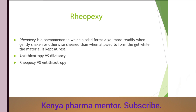To summarize: the difference between rheopexy and anti-thixotropy is that the system is the same, but for rheopexy it only needs a slight shake or slight disturbance for the gel to form immediately. That is the difference. For today's lecture we will stop here, covering thixotropy and anti-thixotropy.